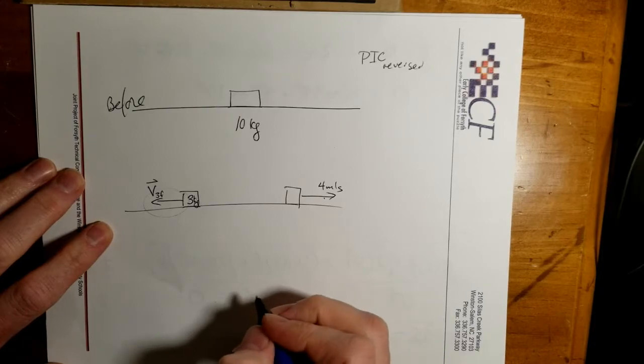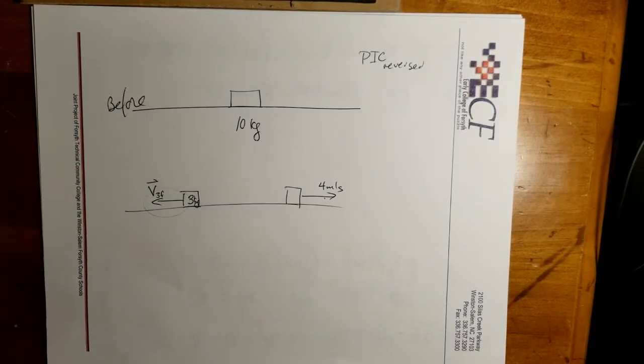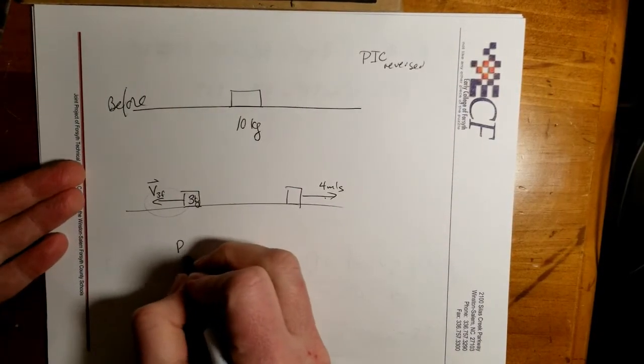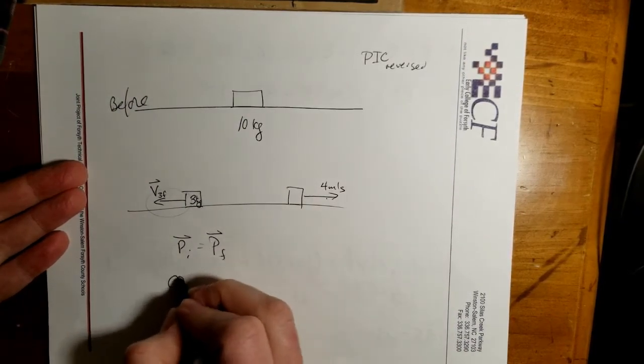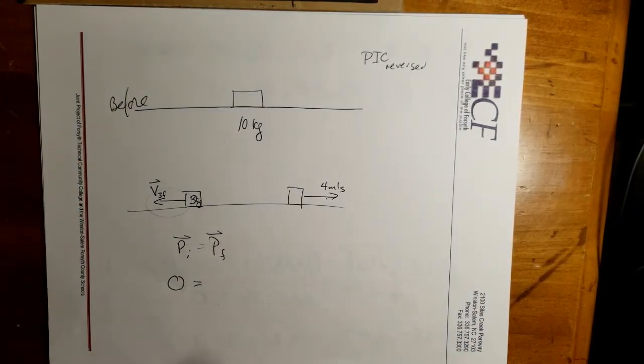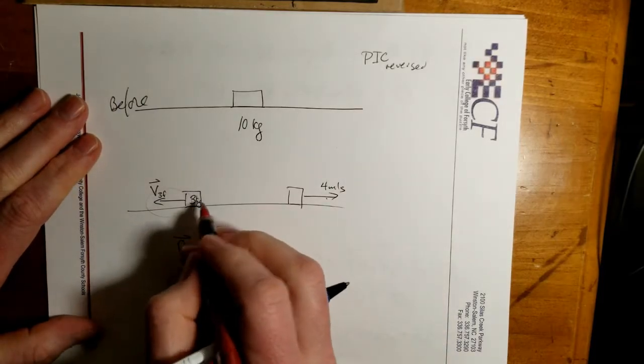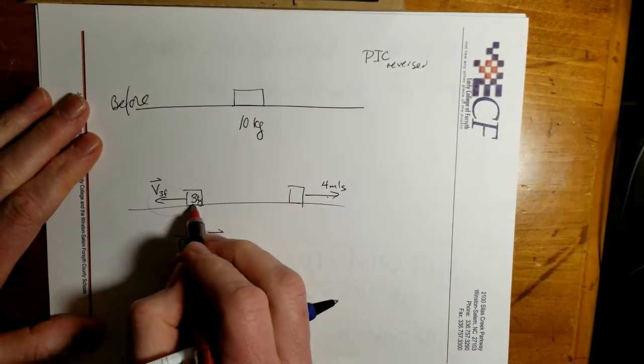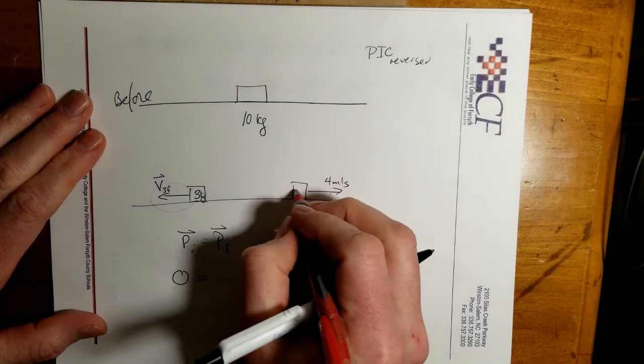So we are still dealing with momentum before equals momentum afterwards. Initially, it is 0. And in the end, we need to do a little bit of thinking here. If it starts out at 10 kilograms and ends up in 3 and something, this has to be 7 kilograms.